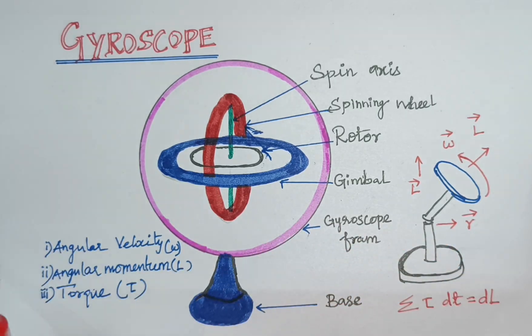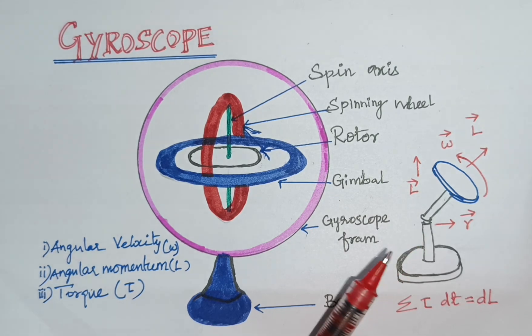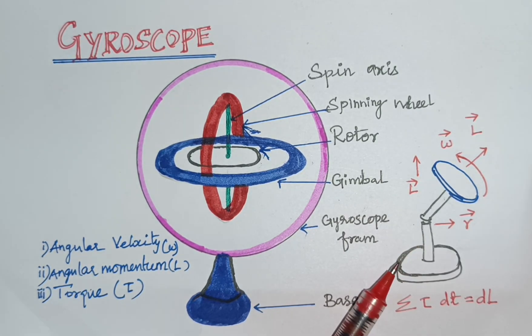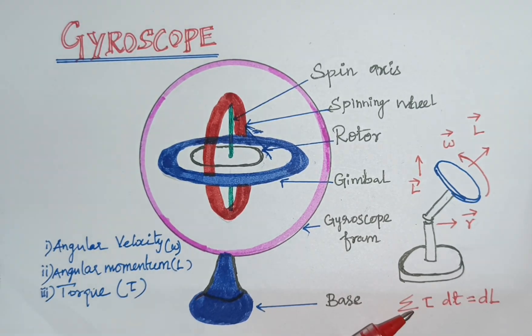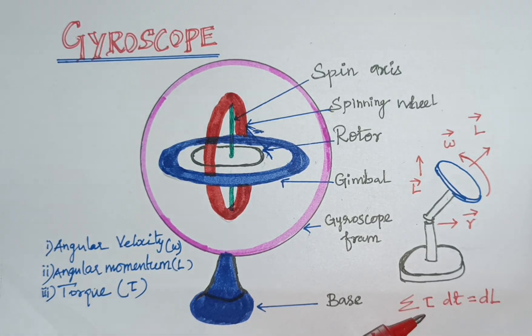The gyroscope is moving steadily, which depends on the time interval and horizontal directions. Based on these equations, summation of τ dt is equal to dL. That is change in angular momentum over time. This is torque.